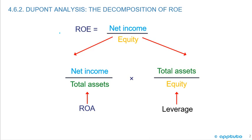ROE is return on equity, and the formula is net income over equity. When we talk about the decomposition of ROE, we're expanding the formulas. The first step is to expand ROE to also equal return on assets times leverage. Return on assets is net income over total assets, and leverage is total assets over equity.